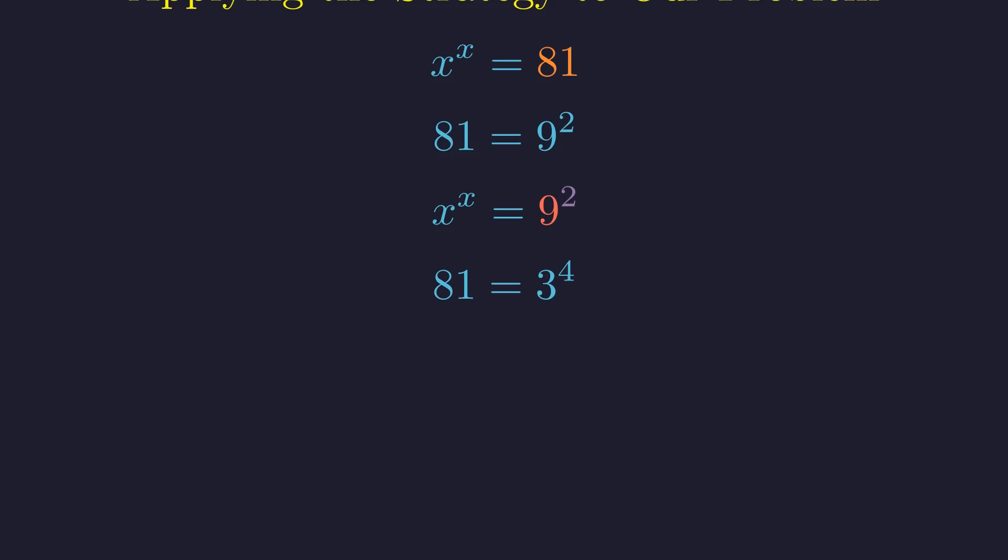Alternatively, 81 can be written as 3 to the 4th power. This gives the equation x to the x equals 3 to the 4th power. Here, the base is 3 and the exponent is 4. They are not equal. This suggests that no integer a exists such that a to the a equals 81.